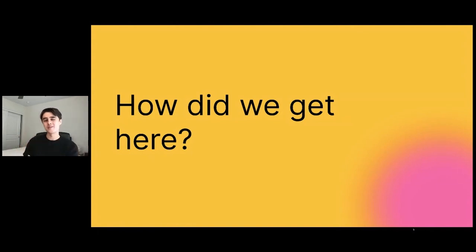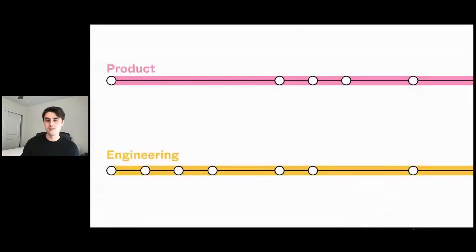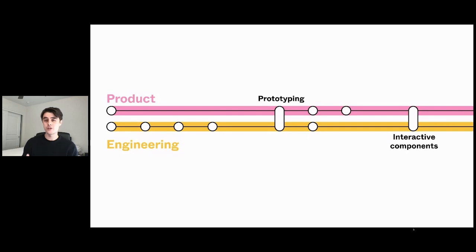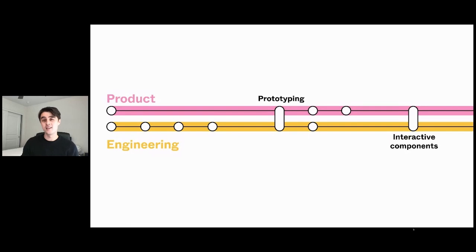Okay, so with that kind of destination in mind, now we can start to talk about the journey. So how did we get here? This journey has these two different parallel paths that are going to be relevant. There's the product journey and there's the engineering journey. These different journeys have a few points where they kind of join up. We're going to be looking at this through the lens of prototyping, although a lot of the ideas behind how we do these things at Figma are going to apply much more broadly. The first join-up point is prototyping, and then the second join point, which is the core of this talk, is interactive components.